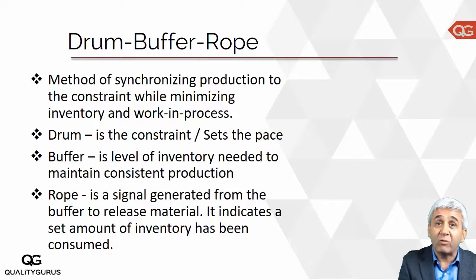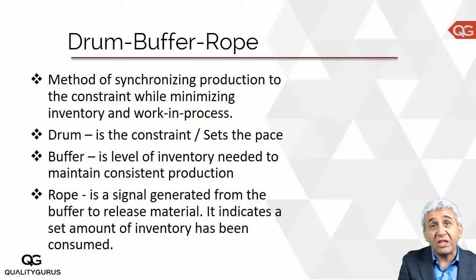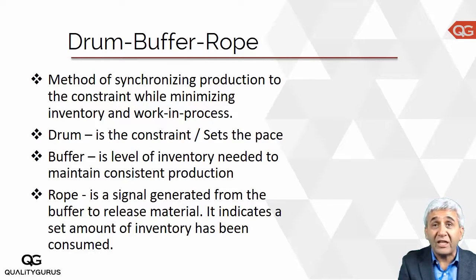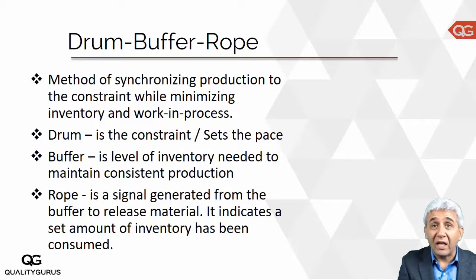The rope is the signal: when the inventory in front of the constraint goes down, the rope sends a signal to the front of the line to release more products, so that the inventory in front of the constraint goes back up to the required level. So the rope gives that signal.